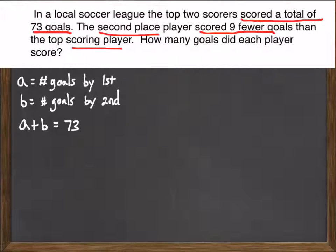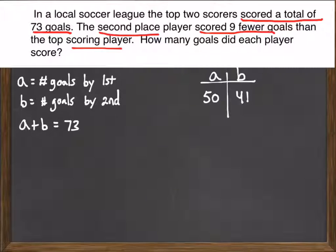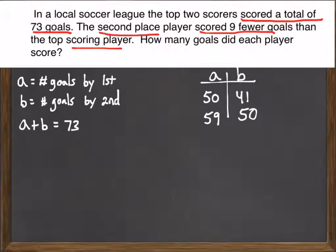Second place scored nine fewer than the top scoring player. A lot of people misread this kind of sentence, so think about it carefully. Look at some numerical examples. For example, if A, the first place player, had 50 goals, and second place was nine fewer, then he'd have 41. Alternatively, if the second place player had 50, then the first place player had 59.